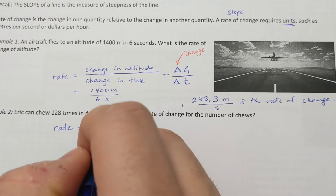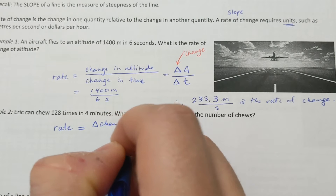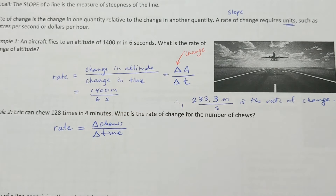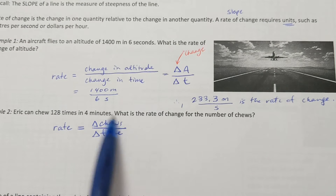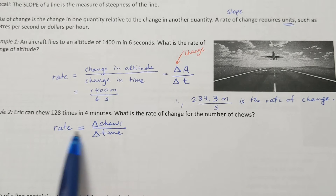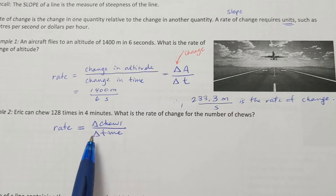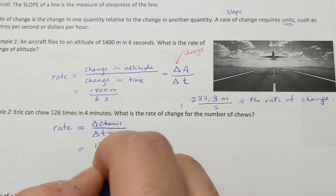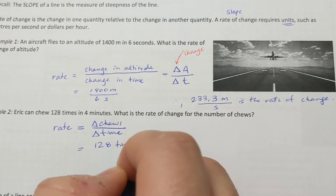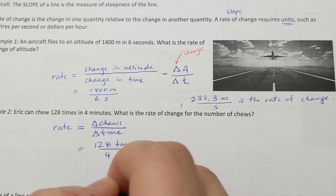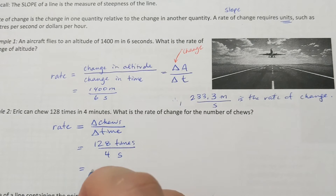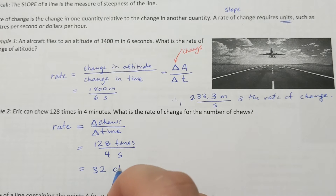This is very similar to slope: change in y over change in x, or change in dependent over change in independent. So it's delta chews over delta time. The change in chews is 128 times, and the change in time is four minutes, giving a final answer of 32 chews per minute.